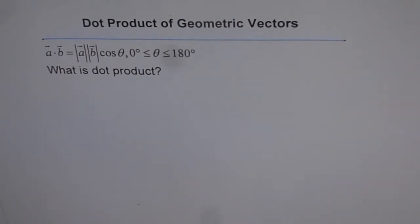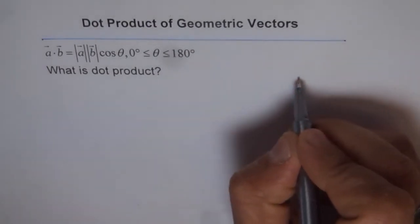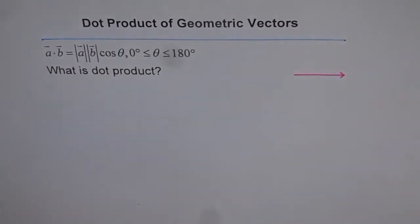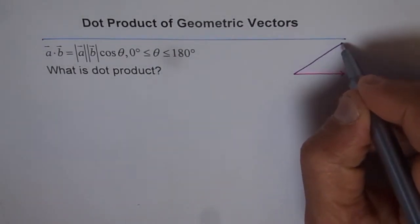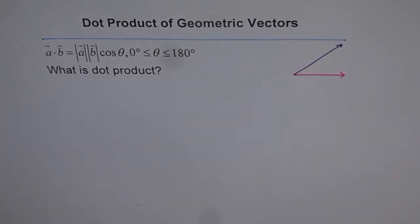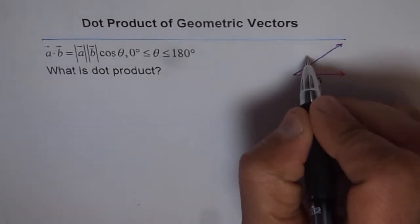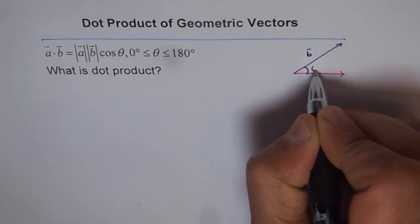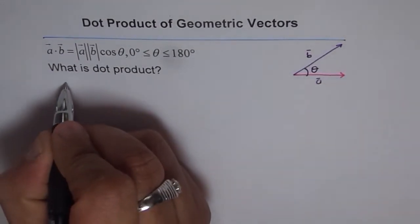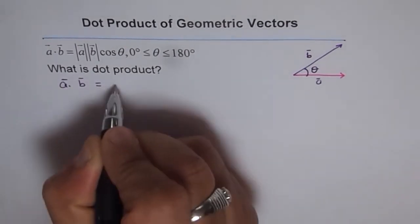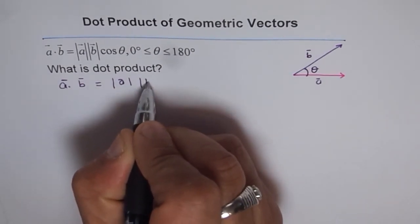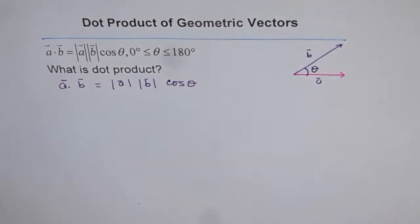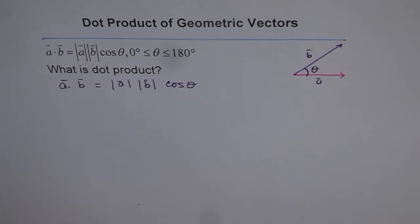Let's explore this and figure out what dot product really is. Let's say this is my vector A — whenever we have two vectors it is a good idea to draw one as horizontal. The other one, vector B, could be anywhere. So we have vector A and vector B with angle theta between them. A dot B equals magnitude of A times magnitude of B times cos of theta. So whenever you have to solve dot product in a problem, just multiply the magnitudes along with the cosine of the angle between them to get the result.